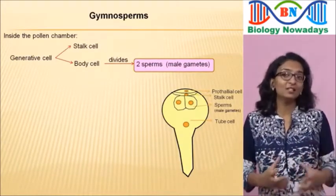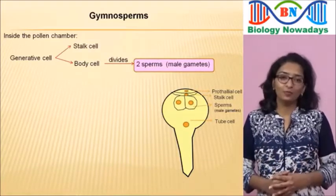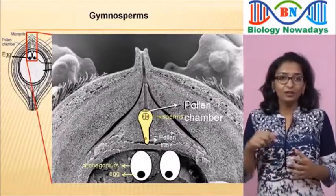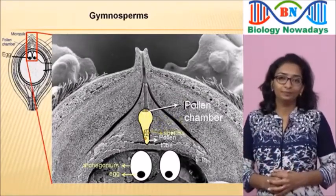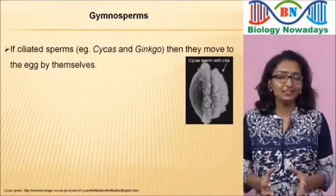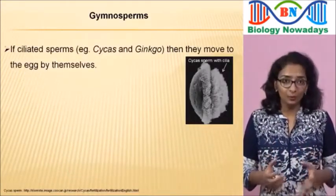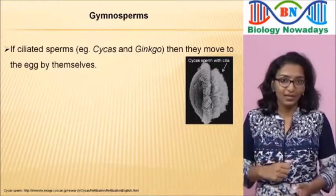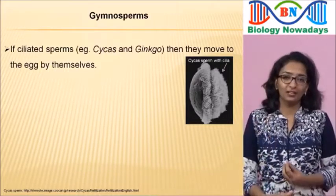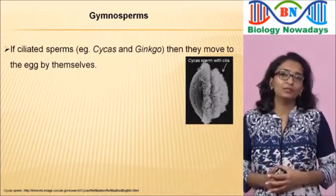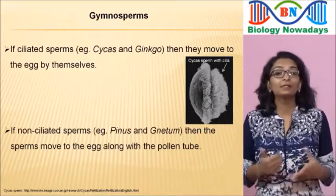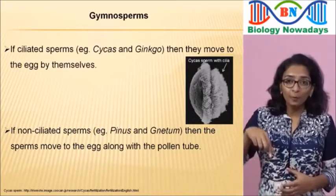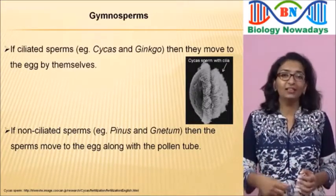In gymnosperms, male sex organs or antheridia are not formed. The pollen tube carrying the male gametes or sperms grows towards the archegonia in the ovule. If the sperms are ciliated, as in Cycas and Ginkgo, the pollen tube will discharge the sperms near the mouth of the archegonia and the sperms will move to the egg. But some gymnosperms like Pinus and Gnetum have sperms with no flagella or cilia — they move along the pollen tube to reach the egg inside the archegonia.